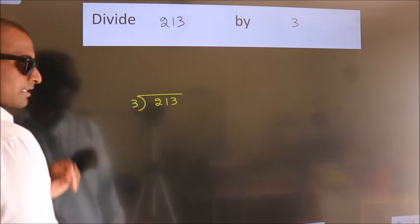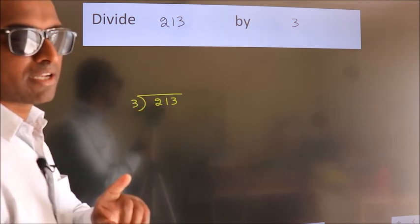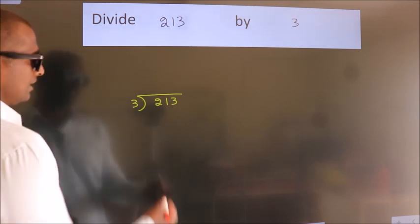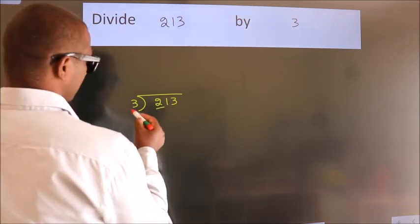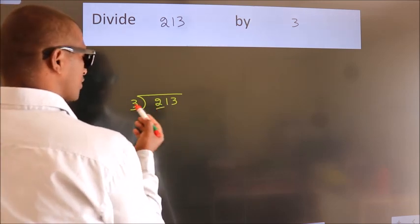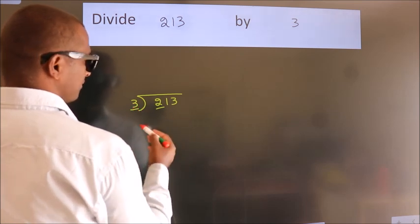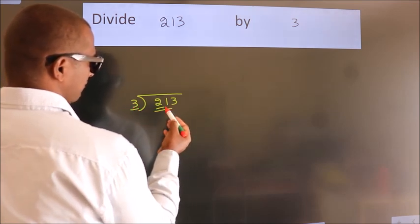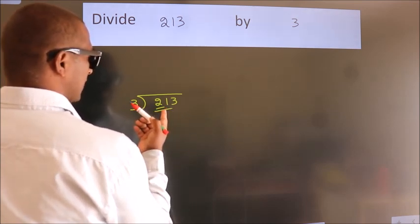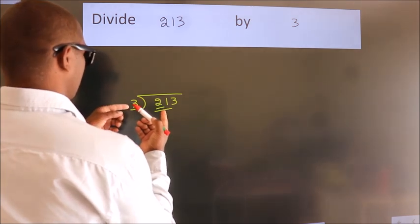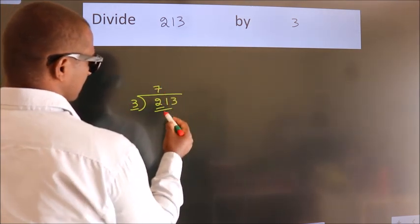This is your step 1. Next, here we have 2, here 3. 2 is smaller than 3, so we should take 2 numbers: 21. When do we get 21? In the 3 table, 3 sevens, 21.